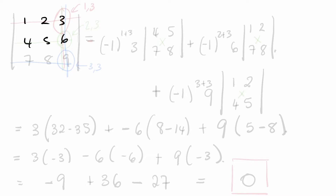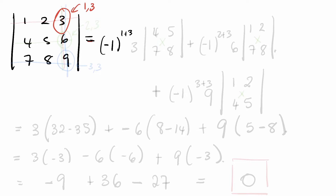Here's our matrix [1, 2, 3, 4, 5, 6, 7, 8, 9]. We're going to use the third column, starting with the element 3, which is in the first row and the third column. So in our cofactor expansion we start with (-1)^(1+3) times 3, multiplied by the determinant of the matrix that's left when you erase that row and column — which is det[4, 5; 7, 8].